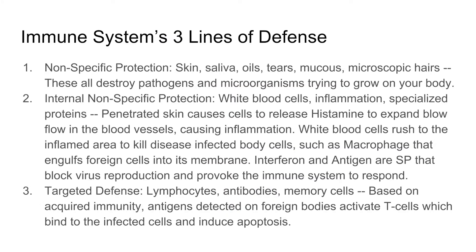Three lines of defense. The first line of defense is nonspecific protection. The second line is internal nonspecific protection. The third line is targeted defense. The first one involves everything outside your body — that includes skin, saliva, oils, tears, mucus, and microscopic hairs. These all destroy pathogens and microorganisms trying to grow on your body. The second one includes white blood cells, inflammation, and specialized proteins. When the skin is penetrated, cells release histamine to allow blood flow in vessels and that causes inflammation. White blood cells rush to the inflamed area to kill diseased, infected body cells.